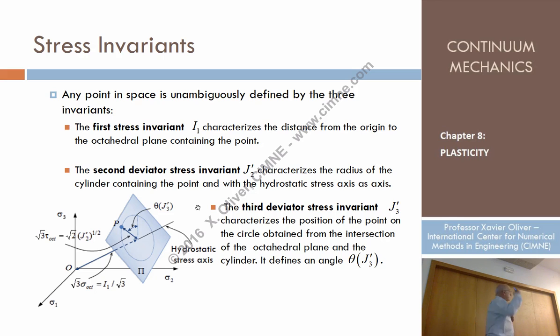Finally, the final conclusion is the following. If the first invariant informs about the distance of this octahedral plane to the origin, then sigma octahedral can be identified, or this distance as I1 divided by square root of 3.